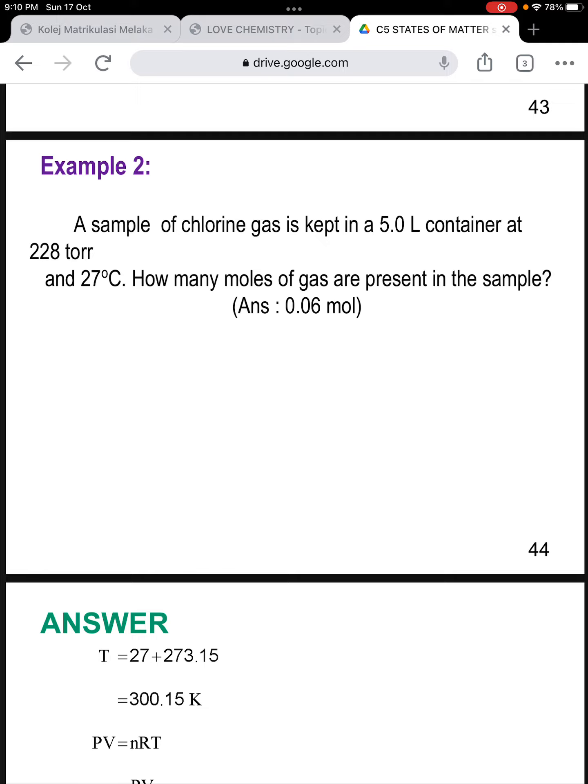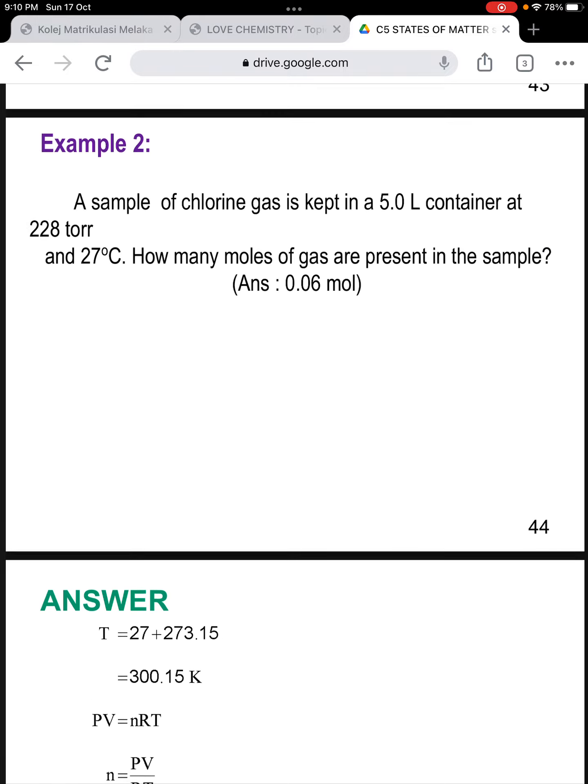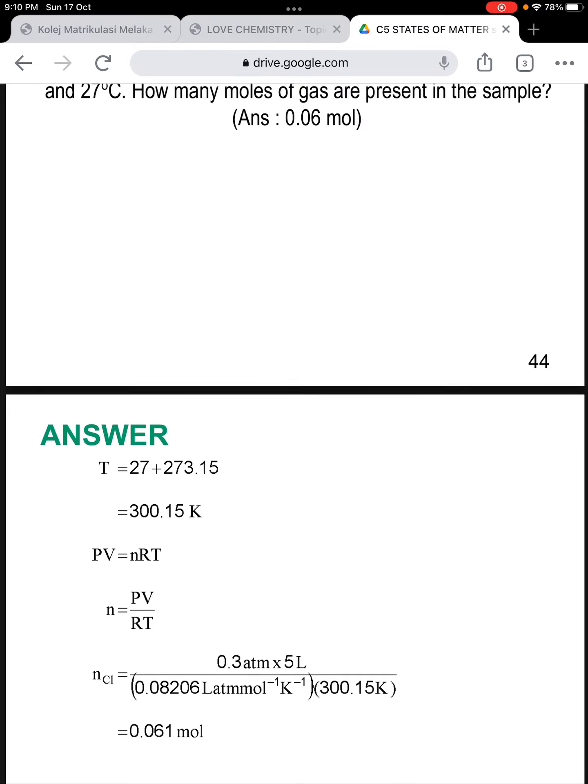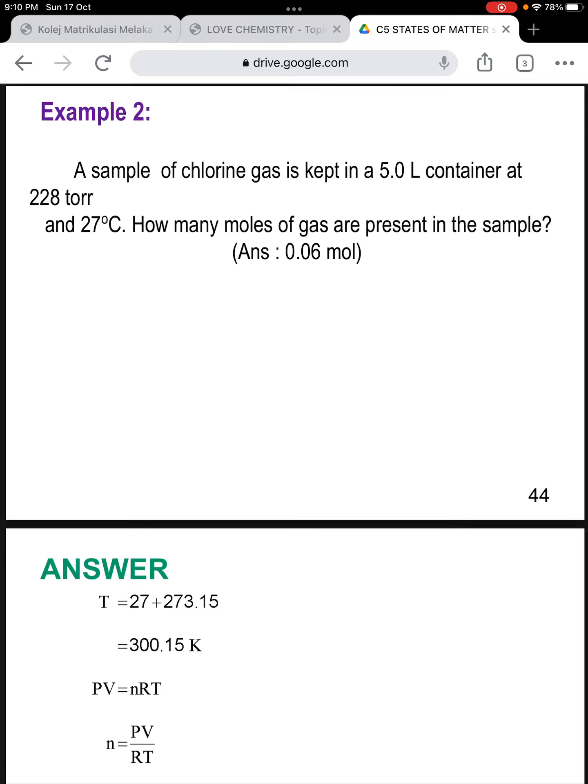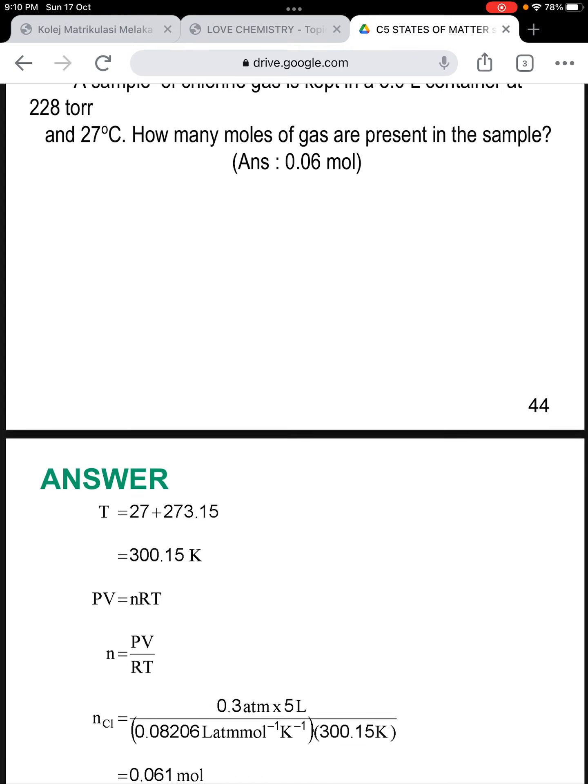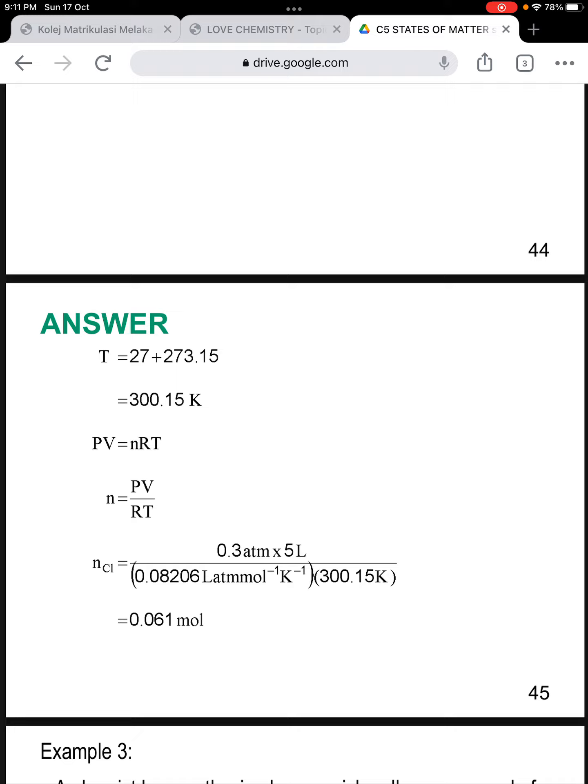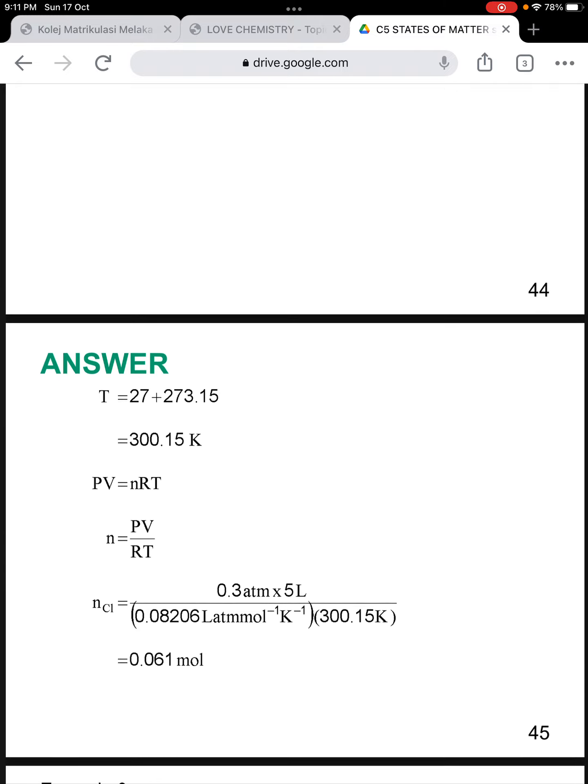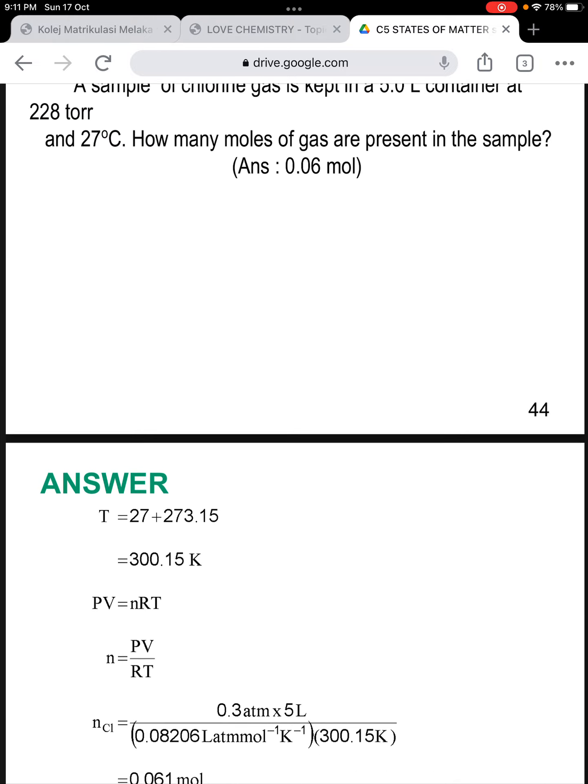Example 2: A sample of chlorine gas is kept in a 5 liter container at 228 torr and 27 degrees Celsius. How many moles of gas are present in the sample? Temperature is 27 degrees Celsius, change it to Kelvin: 300.15 Kelvin. We rearrange the ideal gas equation: n equals PV over RT. Pressure is 228 torr, convert to atm by dividing by 760 torr, which gives 0.3 atm. Volume is 5 liter. R is 0.08206. Temperature is 300.15 Kelvin. The mole calculated is 0.061 mole of chlorine gas present in the sample.